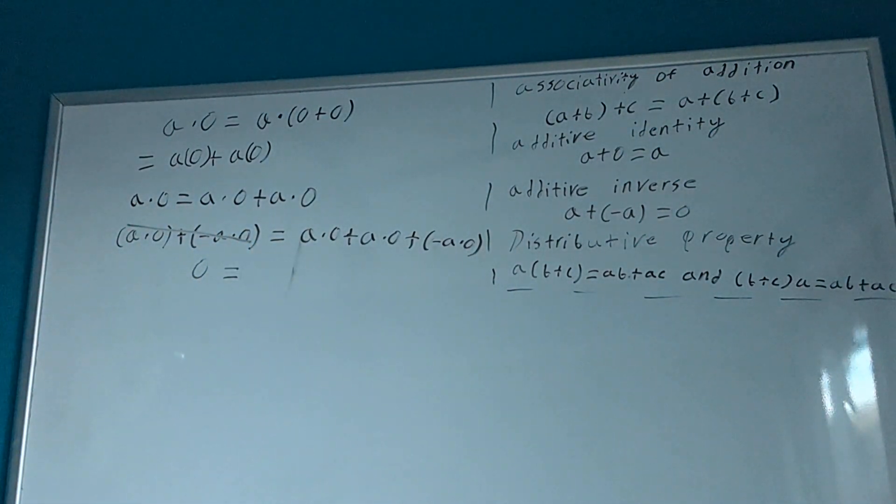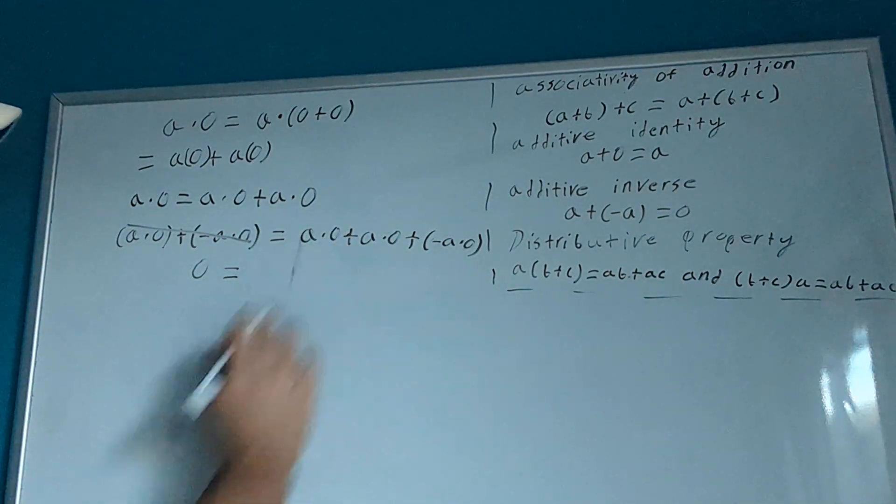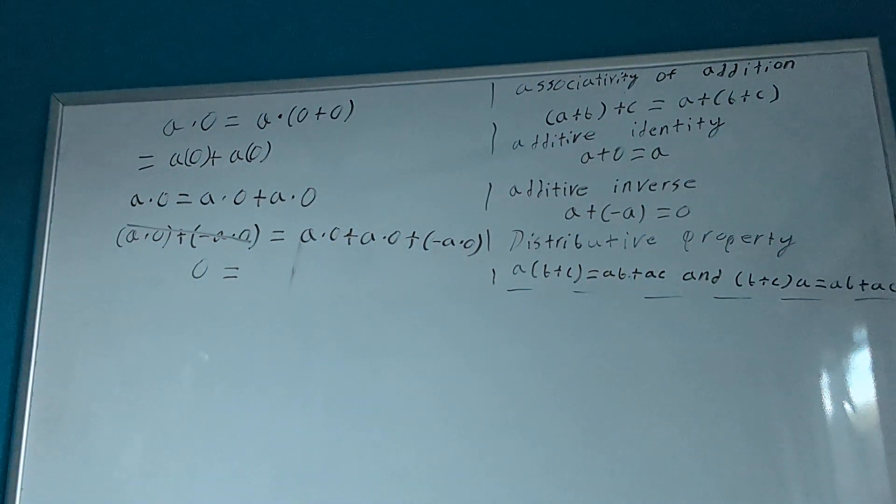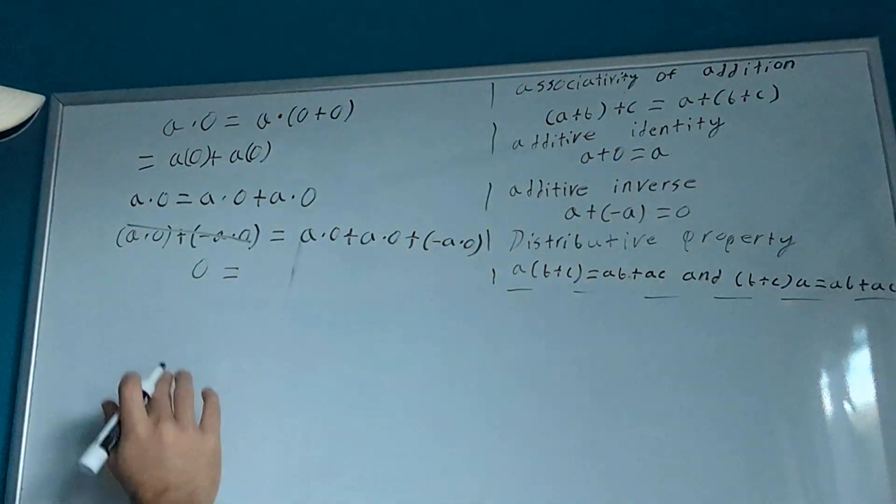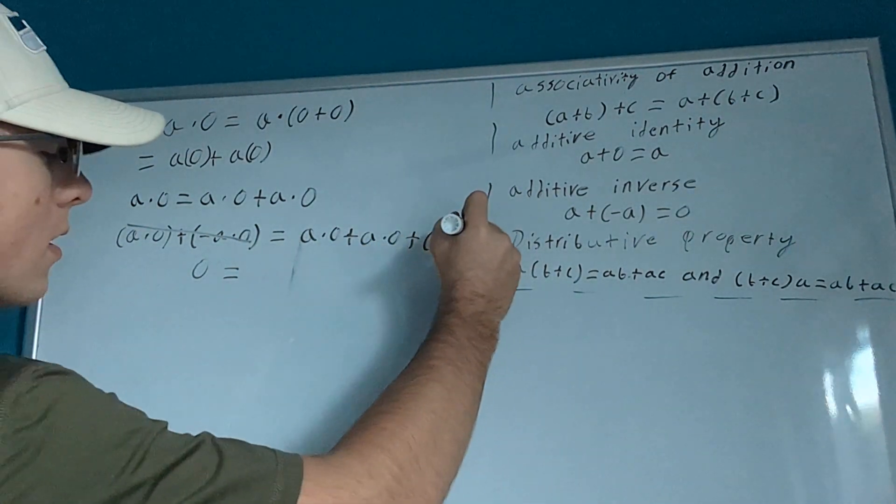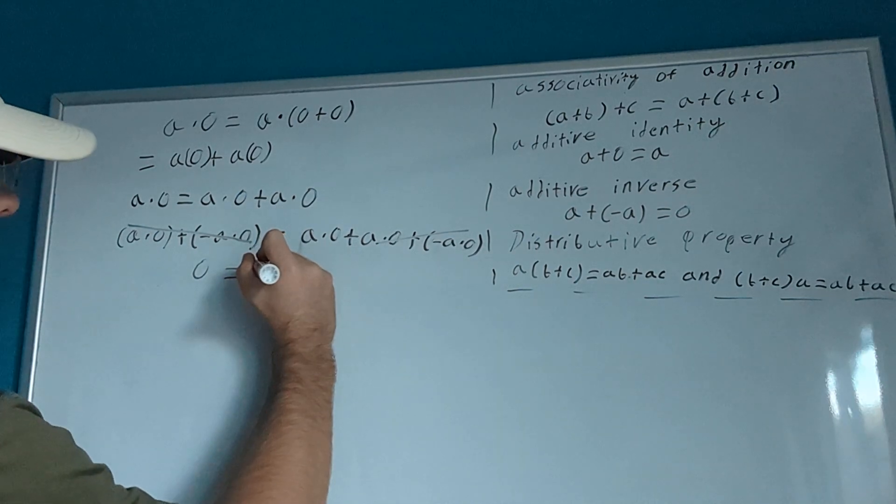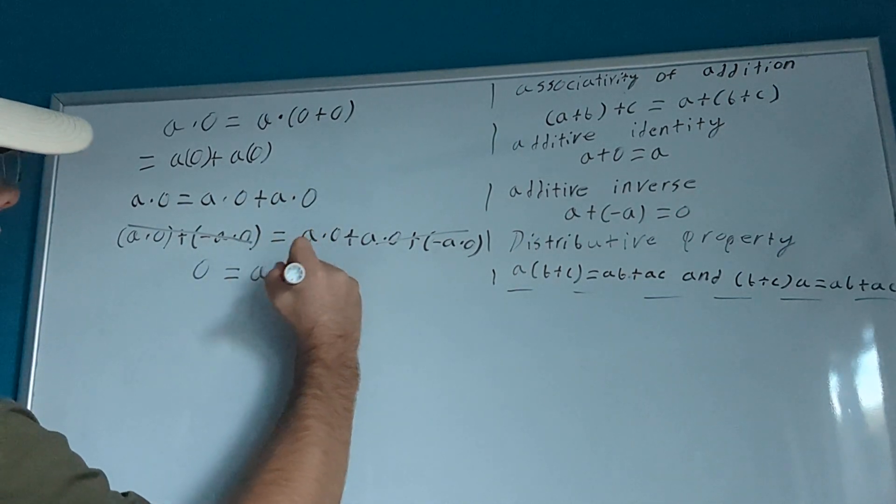Then, over here, we have a times 0 plus a times 0 plus negative a times 0. We can use the additive inverse on these two right here. These will cancel out, and we get 0 equals a times 0.